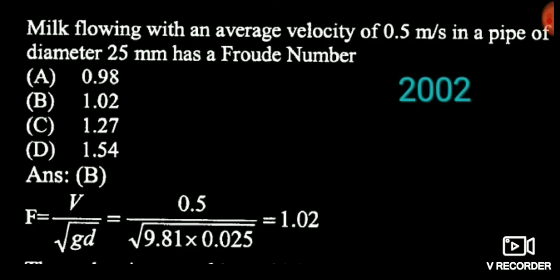Now see the next question. Here it is also asking for the Froude number. Velocity and diameter are given. So Froude number is V / √(g·d). Diameter is given as 25 mm and velocity is 0.5 meter per second. Putting both values, you will get the Froude number as 1.02.